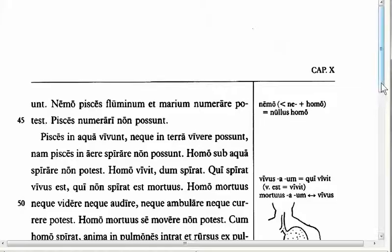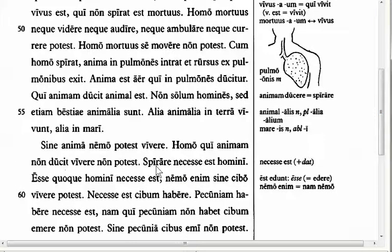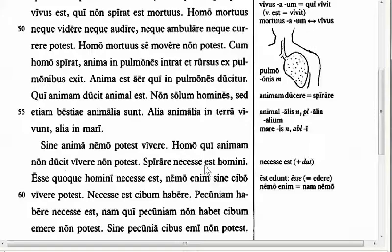The next feature is in line 58. We have necesse est — spirare necesse est homini — it is necessary for a person to breathe. The first feature here: necesse est is what we call an impersonal verb. Impersonal literally means without person, so there is no first, second, or third person singular or plural for this. You can't have necesse sum. We call it impersonal because you add 'it is' in front of the translation: 'it is necessary.' Just know when you translate a verb with 'it' in front and no specific person is mentioned, that it is an impersonal verb.